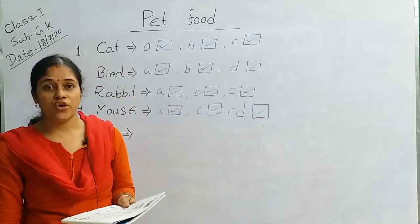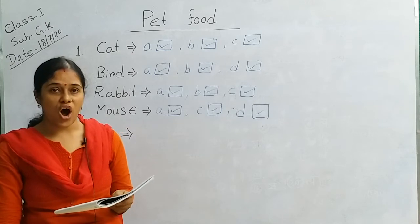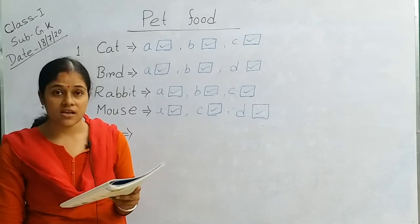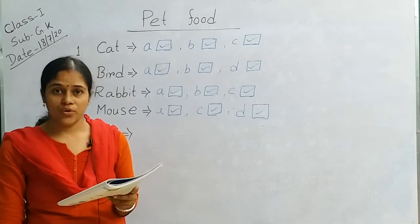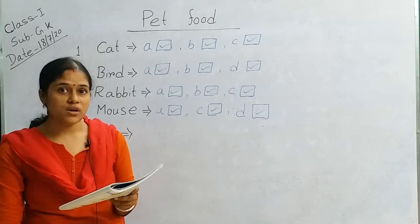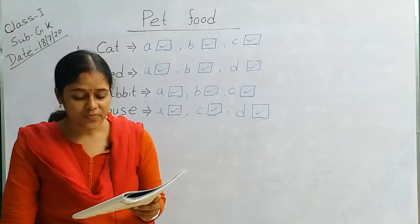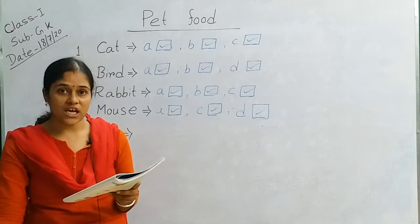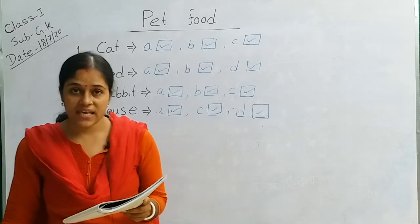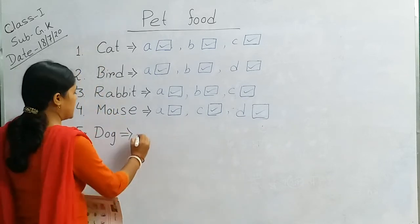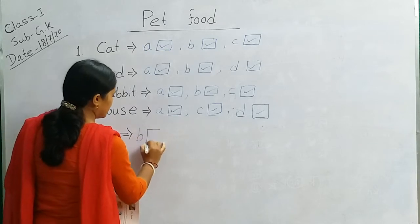Next, number 5, dog. A dog eats, first picture is turnip. No, dog does not eat turnip. Number B, dog eats cookies. Yes, dog eats cookies, so put a tick mark.